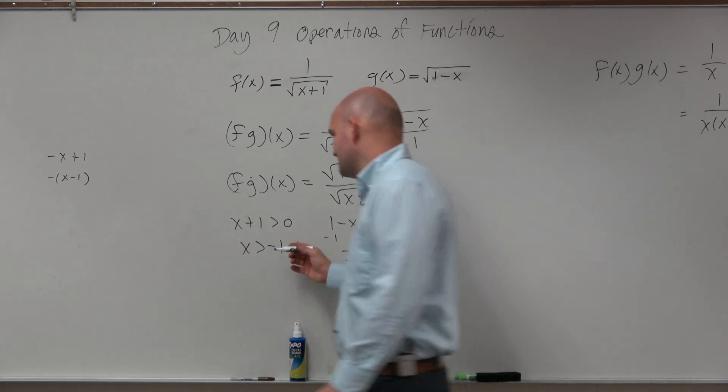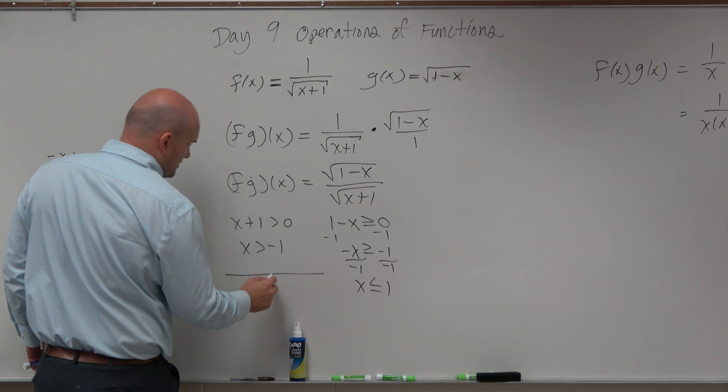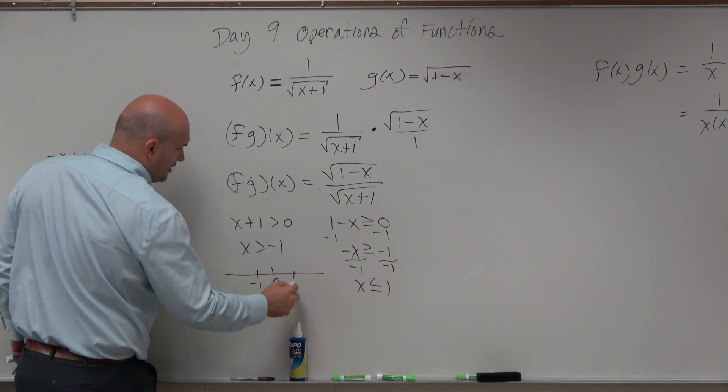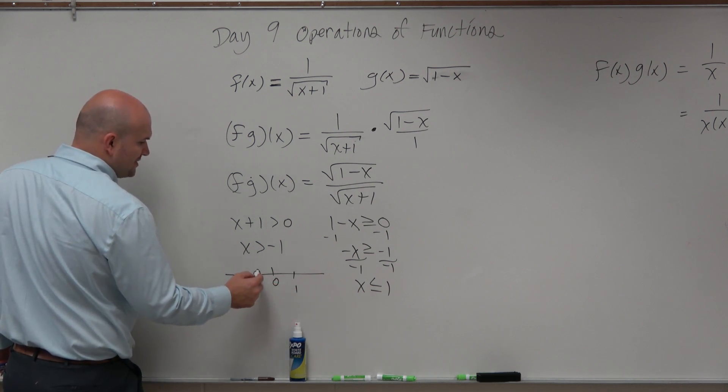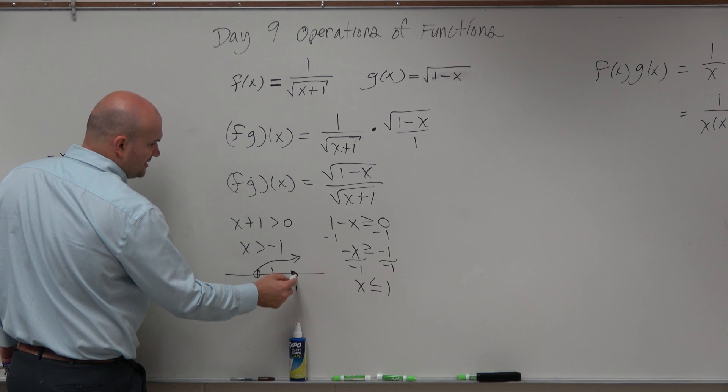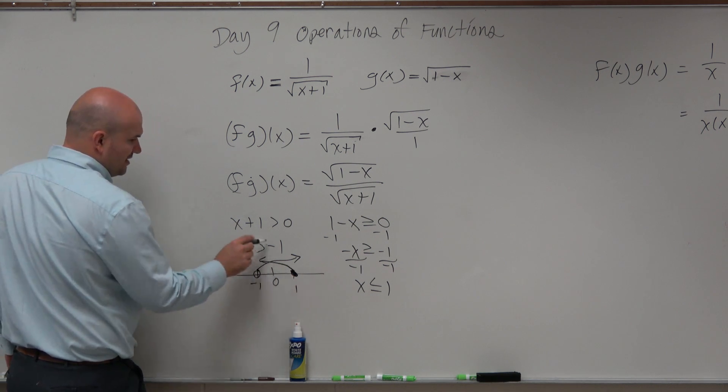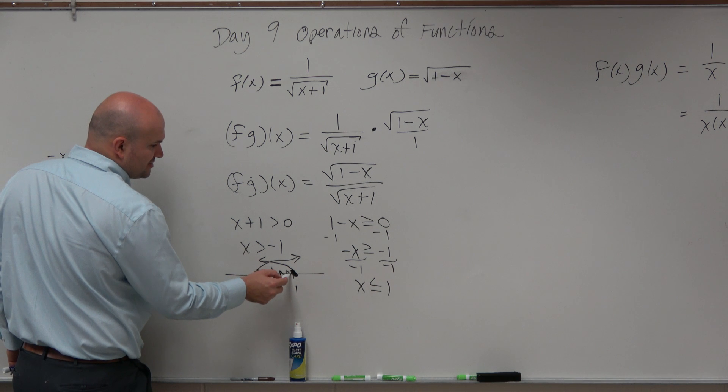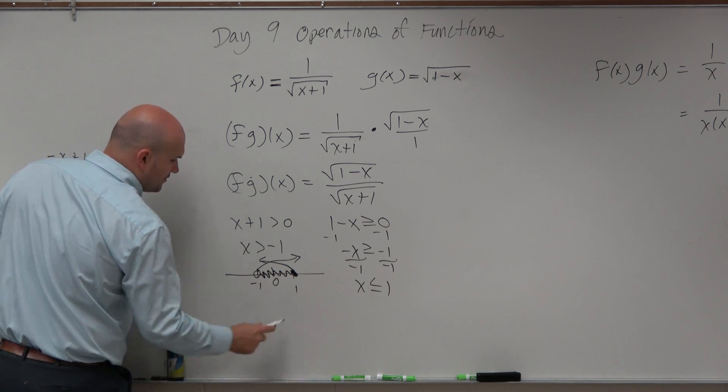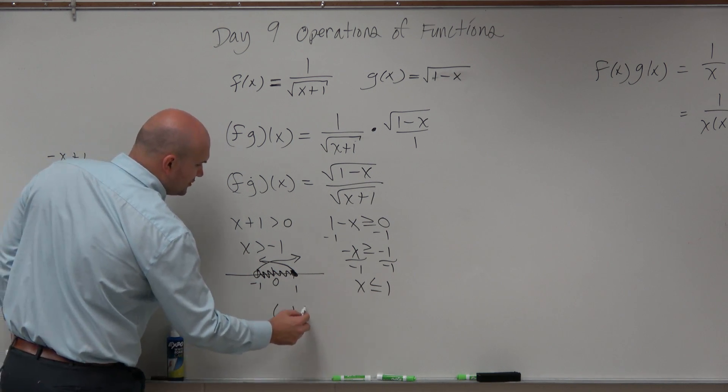Now, if you look at this as a number line: here's 0, here's negative 1, here's positive 1. x has to be greater than negative 1, but x has to be less than or equal to 1. So it looks like this. The shaded area is right there. Therefore, it's going to be negative 1 to 1.